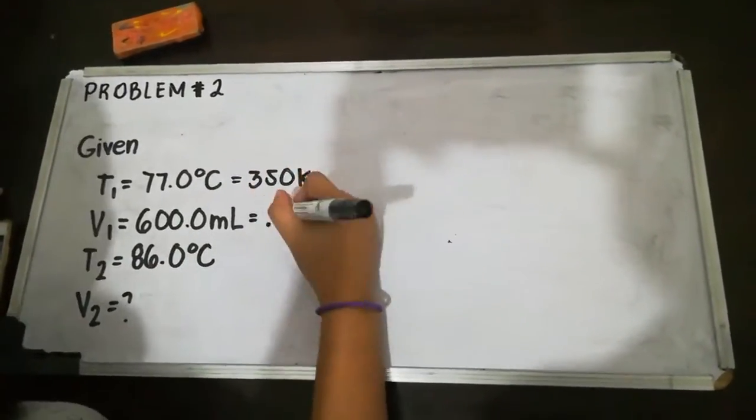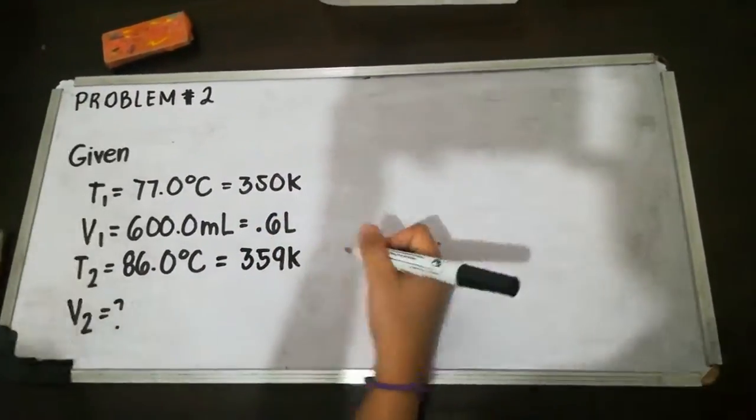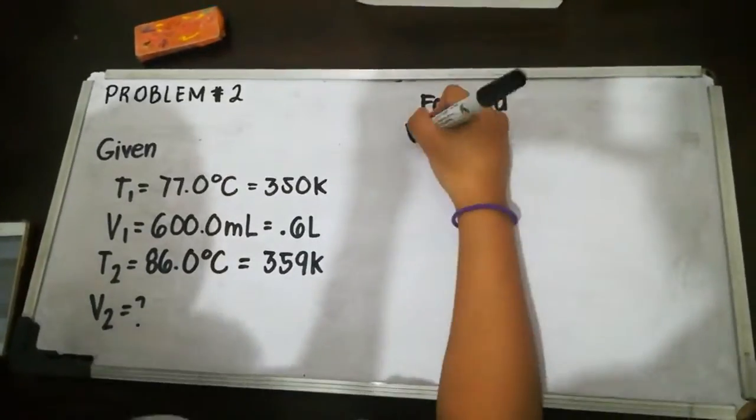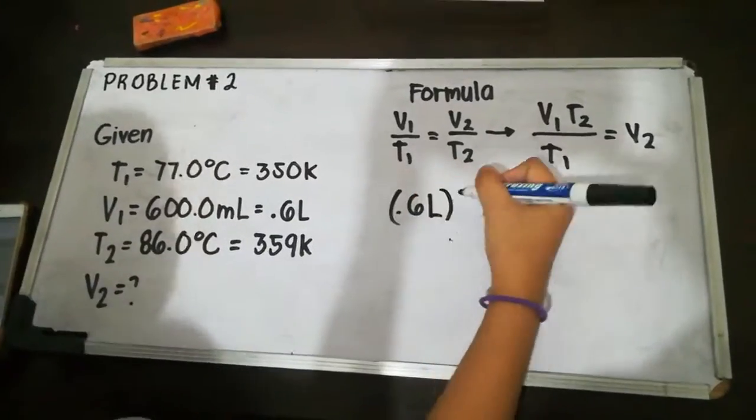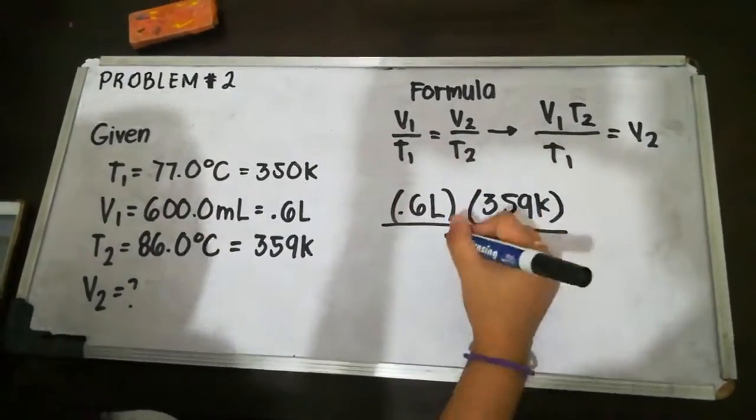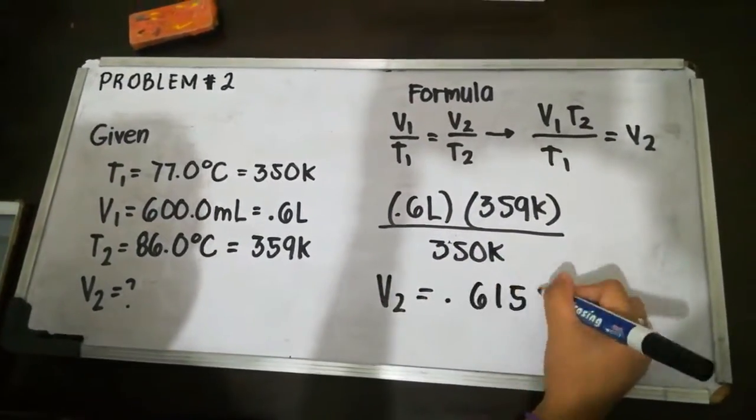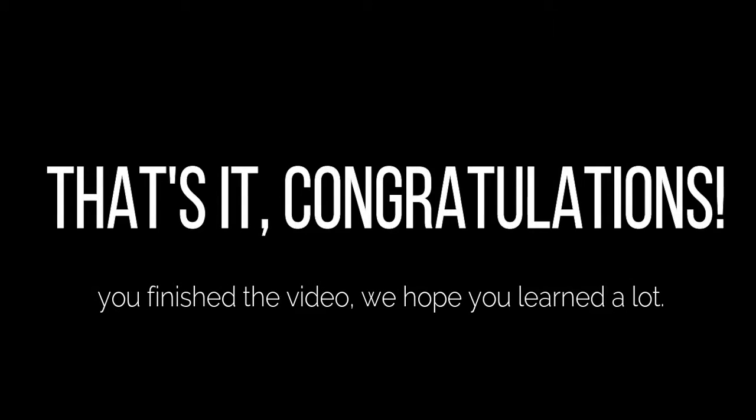We can solve the final volume by multiplying T2 on both sides so that the remaining value is V2. Substituting the values in the equation and calculating, the final volume is 0.613 liters.